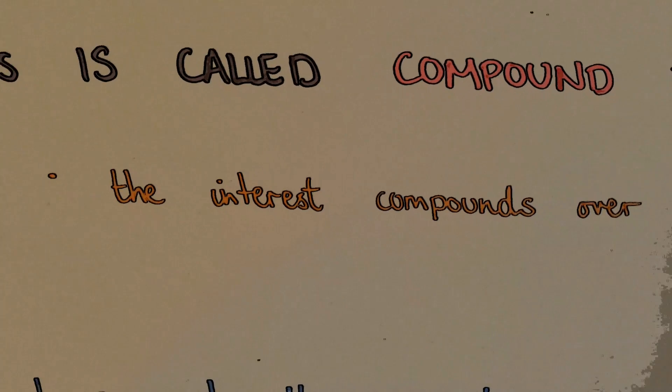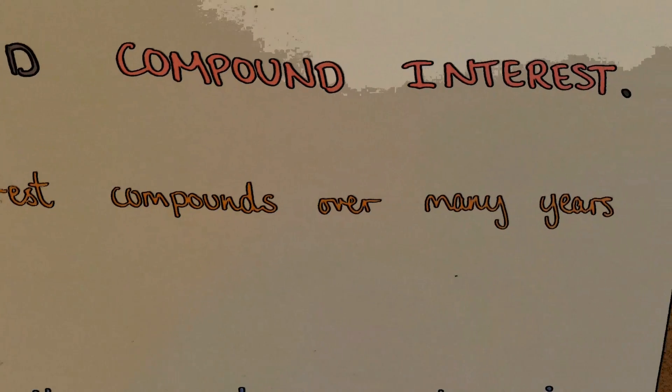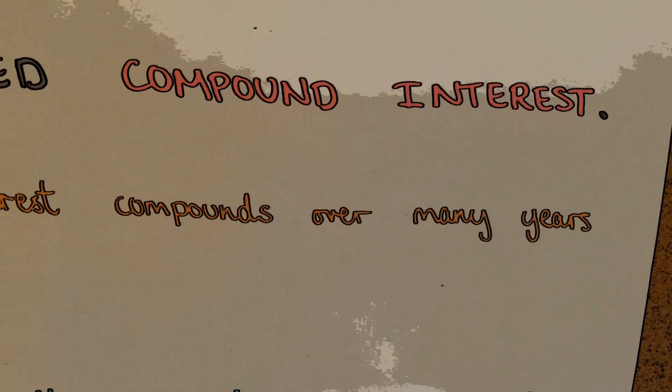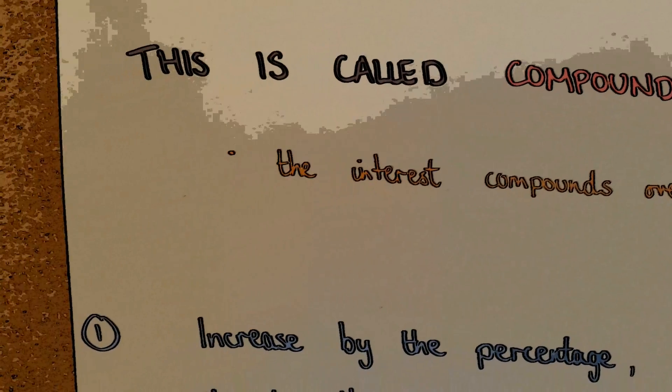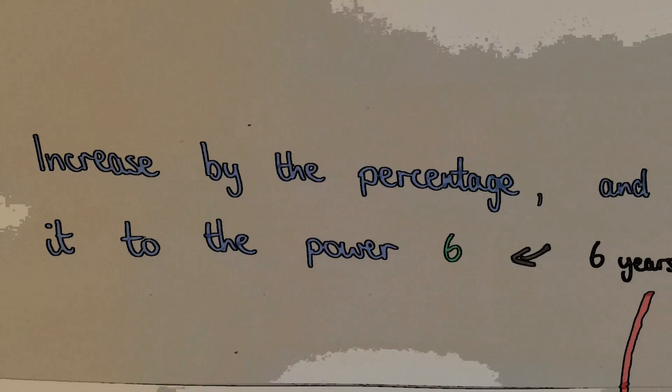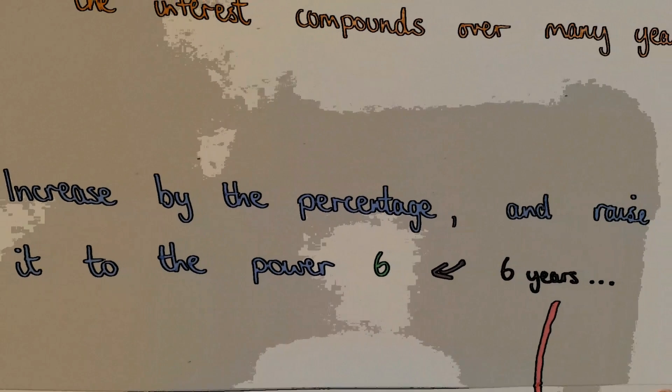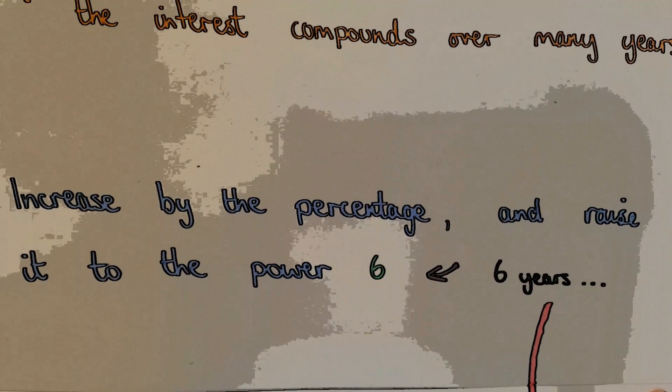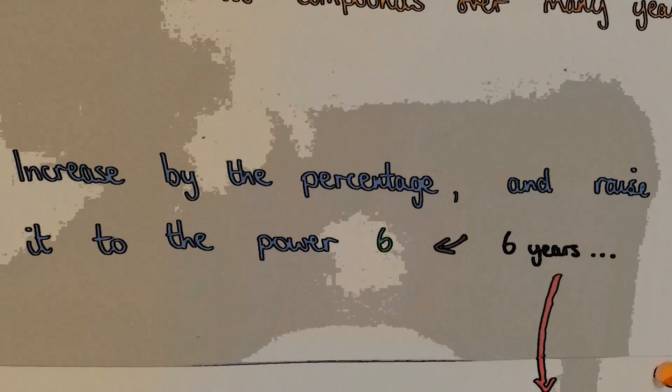For this question, you need to apply compound interest. It's called compound interest because the interest compounds over more than one year. Once you know percentage multipliers, it's quite simple. You increase your amount by the percentage multiplier like normal, but instead you add a power to the multiplier.